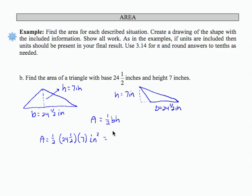So if I take a look at my fraction that is a mixed number, let's turn that into an improper fraction, that would be 49 over 2. 24 times 2 is 48, plus 1 is 49. And then times 7, and I still have my square inches.